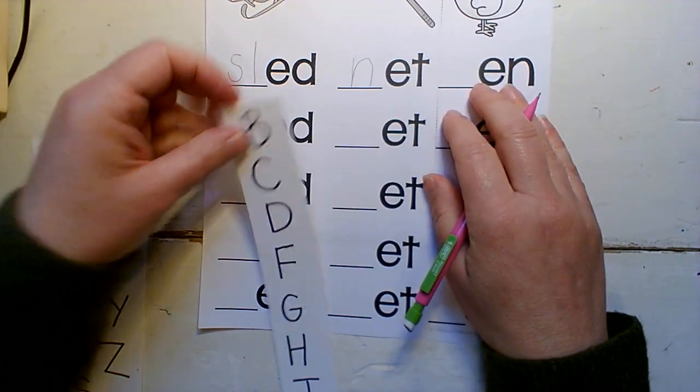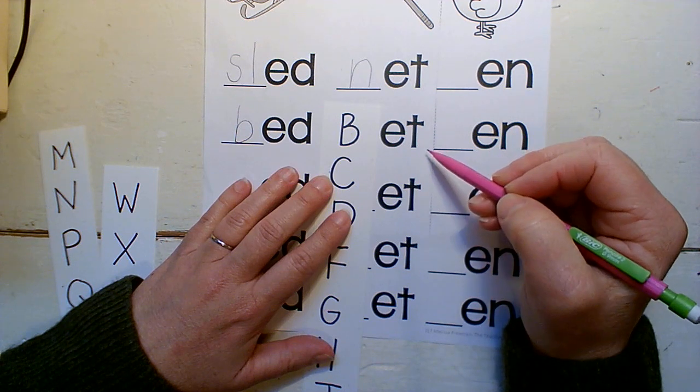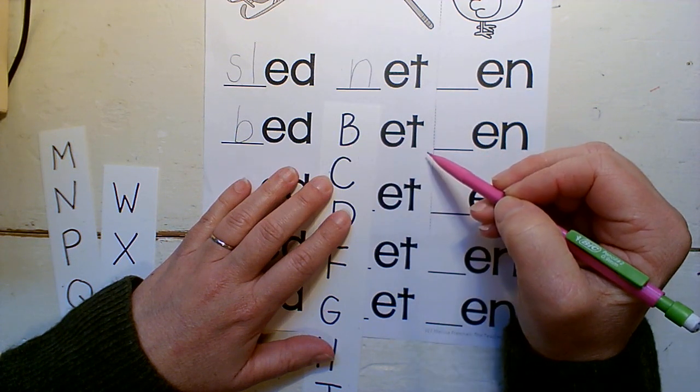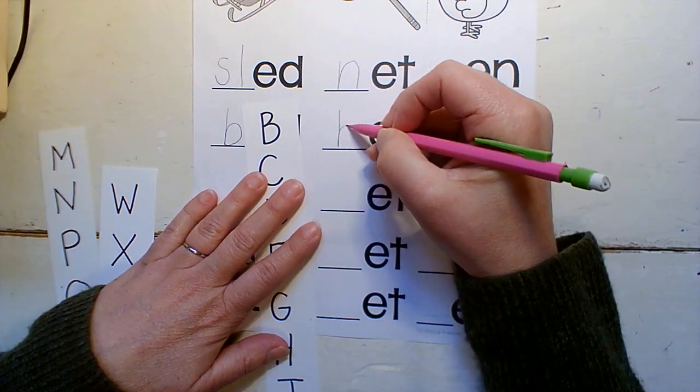Okay, again, let's start with our letters. Let's just see. Does it make a word? B, et. Bet. Yep, that's a word. Bet. I bet you can do this.